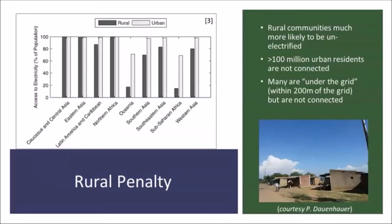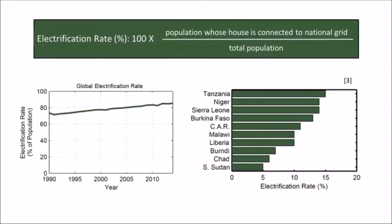It's maybe not surprising that people who don't have access to electricity are generally found in rural areas — there's a rural penalty associated with electricity access. Worldwide, you are far more likely to be energy impoverished if you live in a rural area than in an urban area. But we still shouldn't forget that there are perhaps 100 million or more people living in urban areas that are not connected to the grid — and many live underneath the grid, where they can actually see the power lines bypassing them, going over their house.